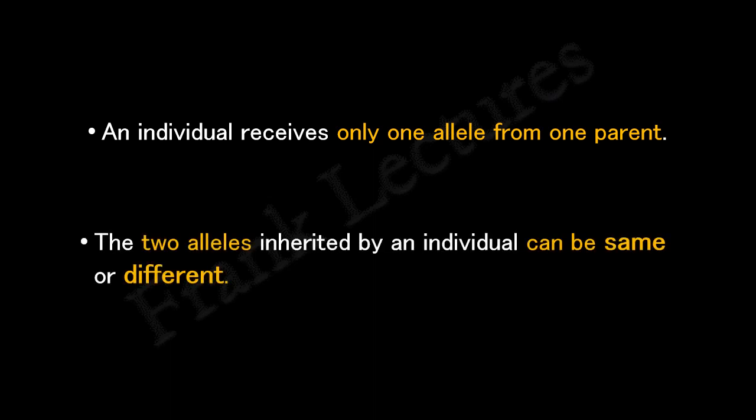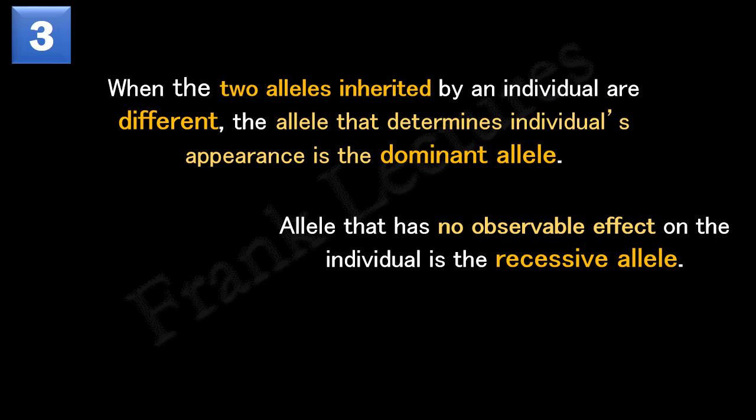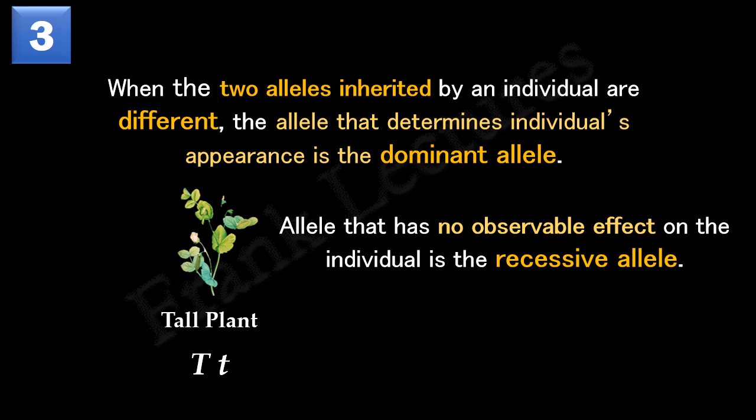An individual receives only one allele from one parent — one from the father and one from the mother — so the total alleles inherited for a character will be two. These two alleles can be same or different. Mendel's third hypothesis states that when the two alleles inherited by an individual are different, the allele that determines the individual's appearance is called the dominant allele, and the allele that has no observable effect is called the recessive allele. Note that dominant and recessive terms describe the case when two different alleles are present together. When tall and dwarf alleles are present together, the tall trait is expressed, making the tall allele dominant and the dwarf allele recessive.